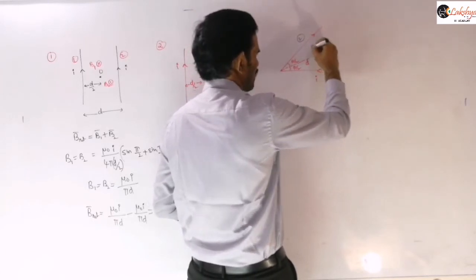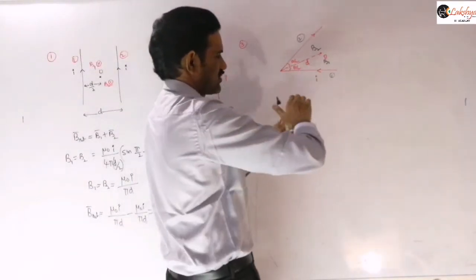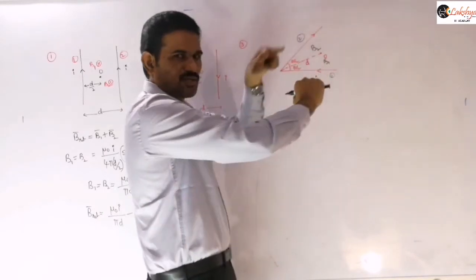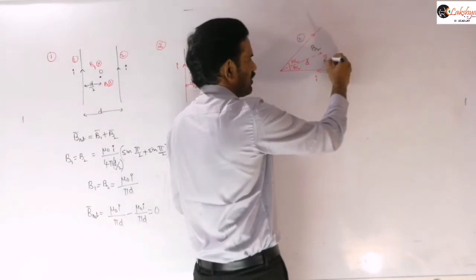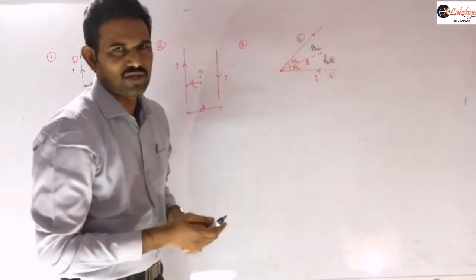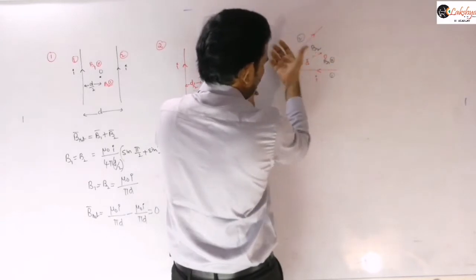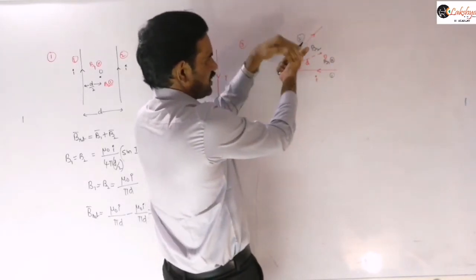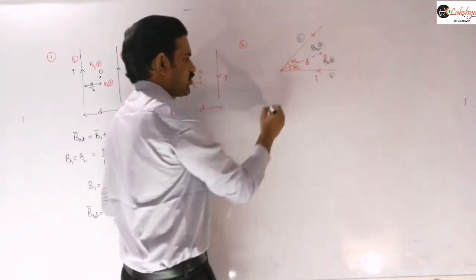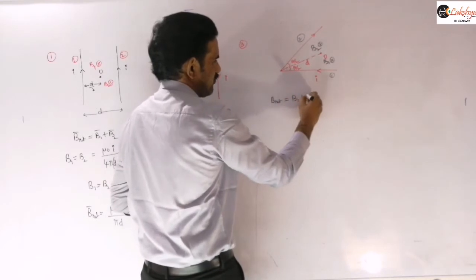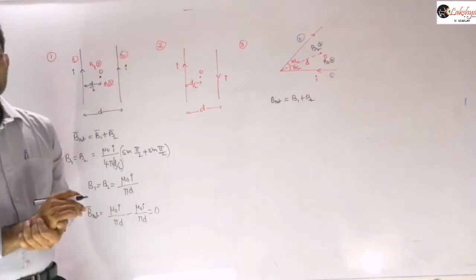For the V-shape problem, both B1 and B2 are into the plane, since current flows into the arms and field lines enter the plane at point O for both conductors. Since both are in the same direction, the net field is B = B1 + B2, and we just add their magnitudes.